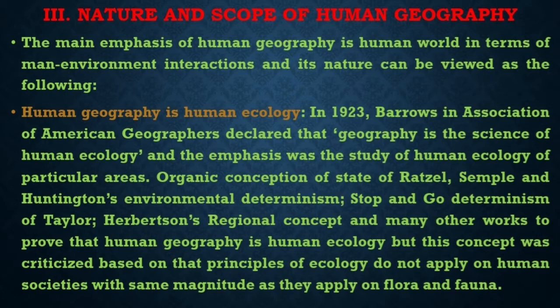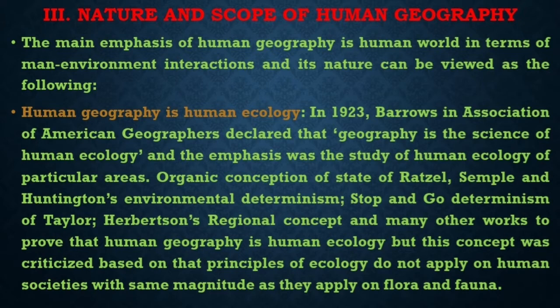First, Human Geography is human ecology. In 1923, Barrows, in the Association of American Geographers, declared that geography is the science of human ecology, and the focus was the study of human ecology of particular areas. The organic conception of state of Ratzel, Semple and Huntington's environmental determinism, stop-and-go determinism of Griffith Taylor, Herbertson's original concept, and many other works sought to prove that human geography is human ecology. However, this concept was criticized on the basis that the principles of ecology do not apply to human societies with the same magnitude as they apply to flora and fauna.